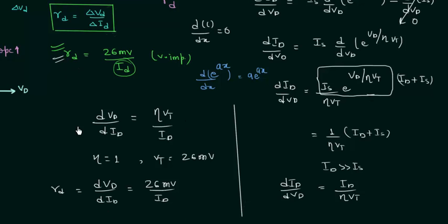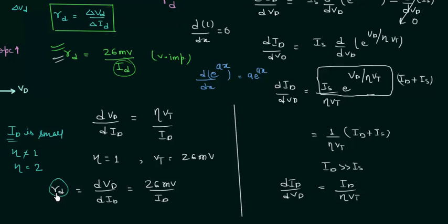There are some constraints related to this equation. When the diode current Id is small, the value of eta is not equal to 1 but equal to 2, so you must replace eta by 2. Also, when calculating the AC resistance near the knee of the VI curve — which is the curved portion before the vertical rise — this equation becomes inaccurate. The equation is accurate only for the vertical rise section. Keep these two points in mind when solving numerical problems using this equation. That's all for this lecture; see you in the next one.